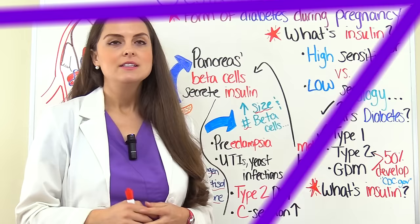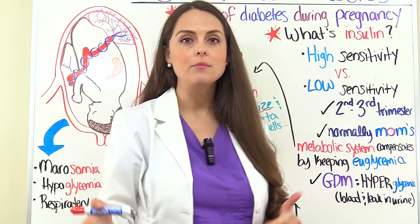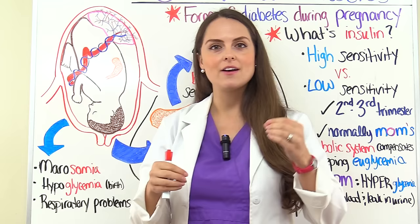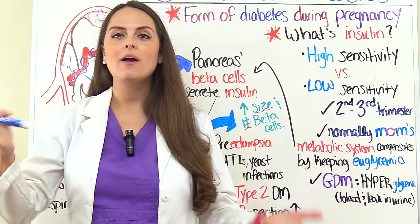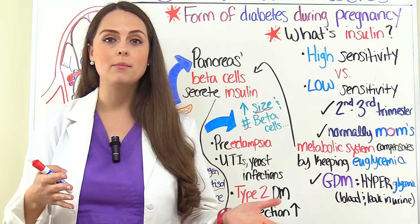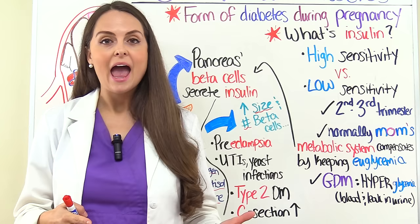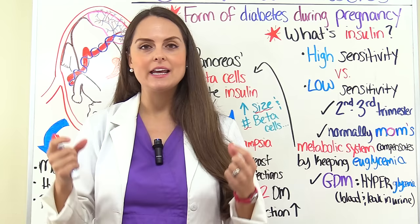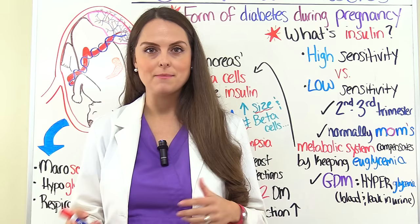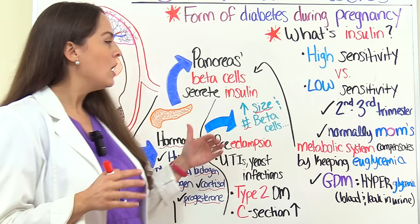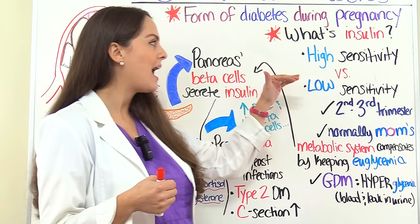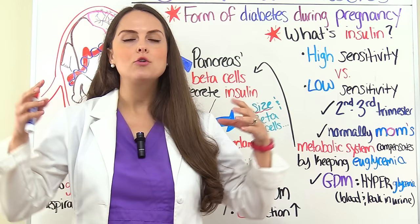Insulin is a hormone produced by the pancreas's beta cells and it influences cells to take in glucose so they can use it for energy. During pregnancy there are so many changes occurring in mom's body. One change is to the metabolic system, and one thing that's going to be affected is insulin sensitivity — how receptive those cells are to take in glucose. During the beginning of pregnancy, early pregnancy, we have a high insulin sensitivity, meaning those cells are being influenced by insulin and they're readily taking in the glucose from mom's blood.